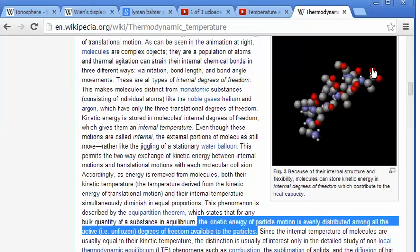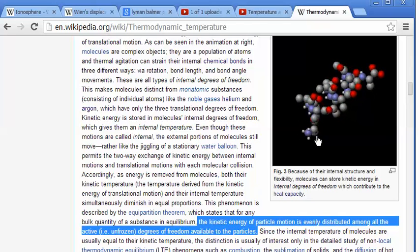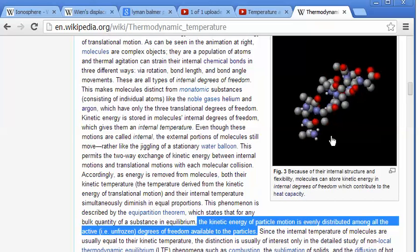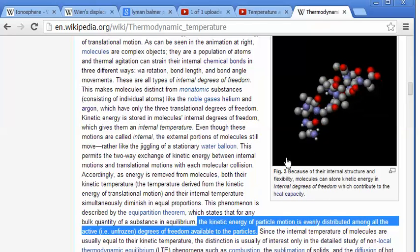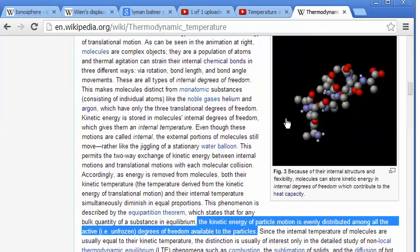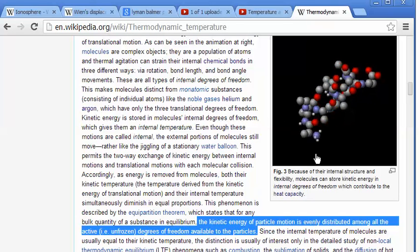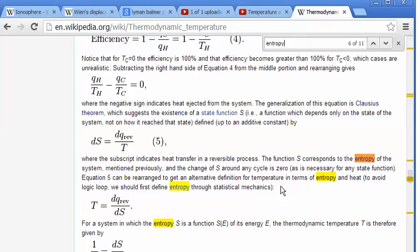Now imagine counting every possible microstate of this system that has a certain particular energy. In general, if I add energy to this system, then there are more ways that this molecule could be moving. Now if you actually count all of the possible ways that this molecule could be moving, the measure of that, the number of ways that it could be moving is called entropy.